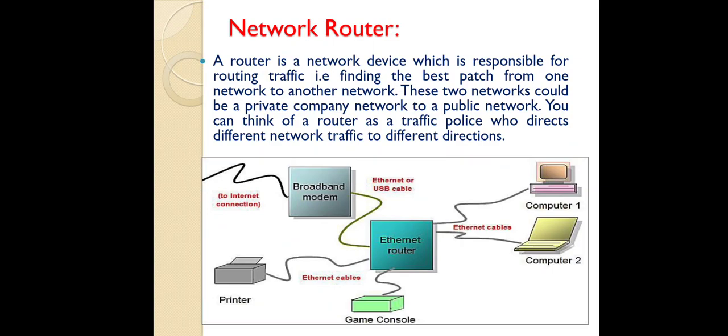For example, if computer A wants to send data to computer B which is on another network, there can be thousands of links and thousands of ways between them. The network router helps in finding the best path for transferring the data from computer A to computer B. That concept is called routing.